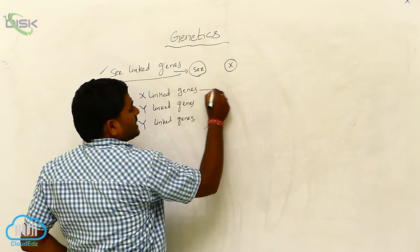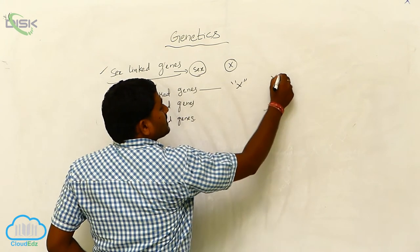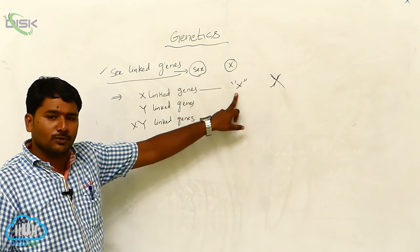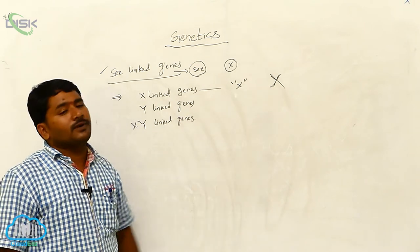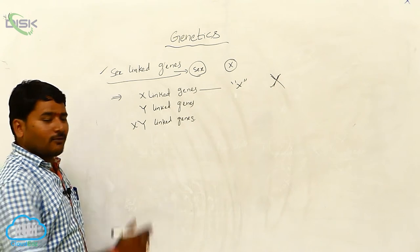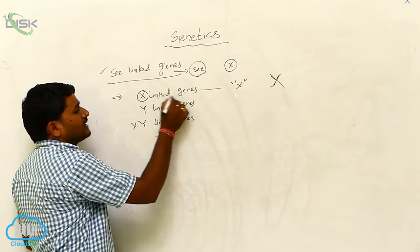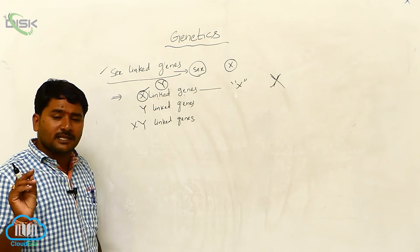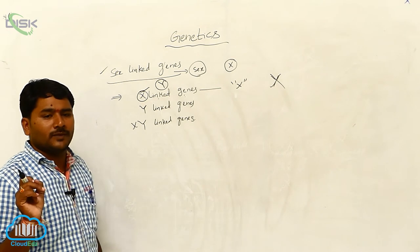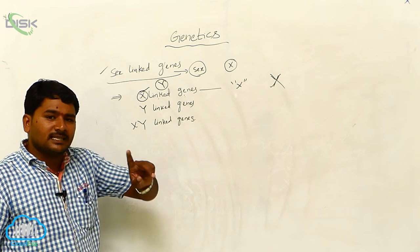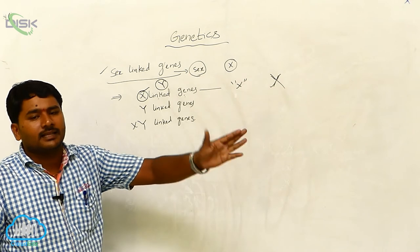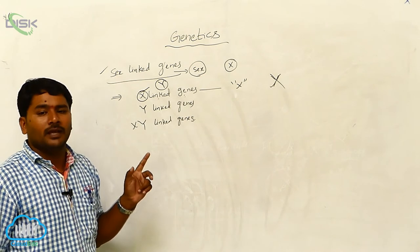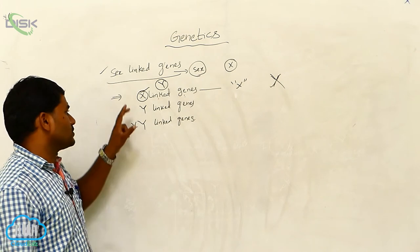X-linked genes: the genes present on the X chromosome and absent on the Y chromosome. The genes whose alleles are present on the X chromosome and are absent on the Y chromosome are called X-linked genes. Sex-linked genes are present on only one sex chromosome and absent on the other. If they are present on the X, they are absent on the Y. The genes which are present on the X chromosome and whose alleles are absent on the Y chromosome are called X-linked genes.